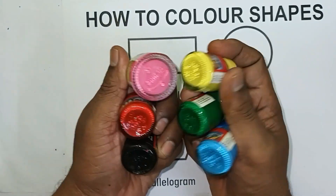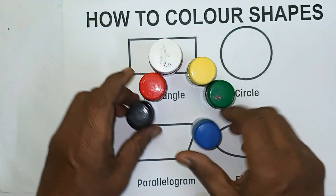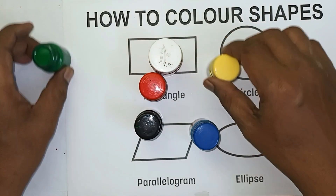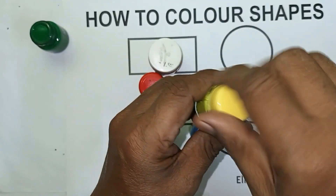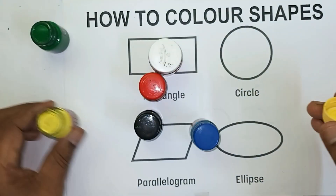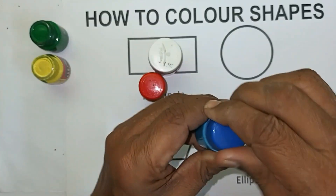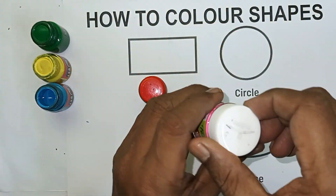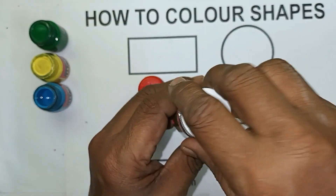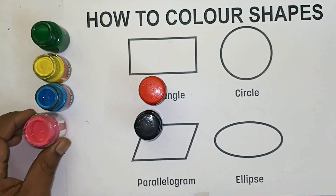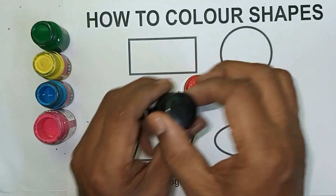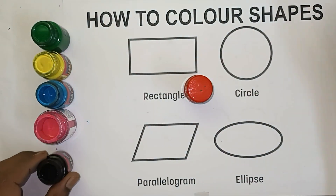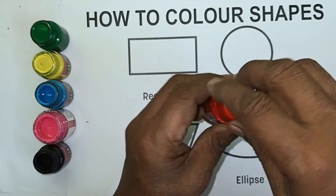Colors, colors! This color — green color. This color — blue color. This color — pink color. This color — black color. Red color.